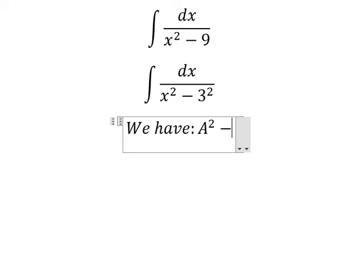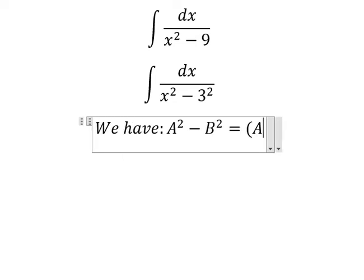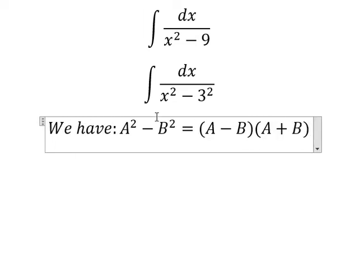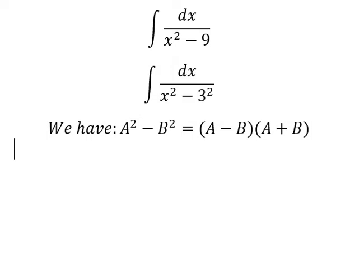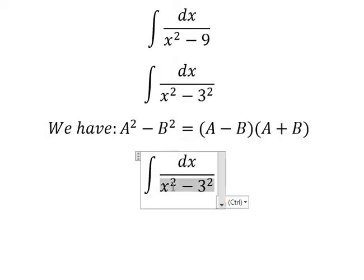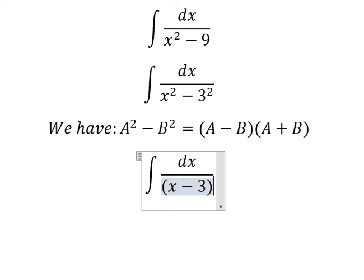A squared minus B squared equals to A minus B multiplied by A plus B. So we know that this one we can transform into this one and that is about x minus number three multiplied by x plus number three.